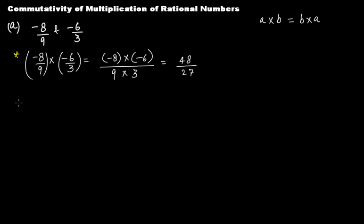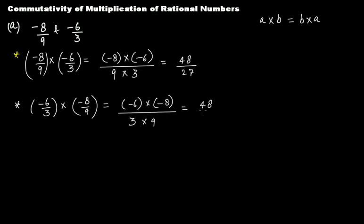Now let's do -6/3 into -8/9. Again the numerators together: -6 times -8, and this is 3 times 9. This becomes again 48 over 27.